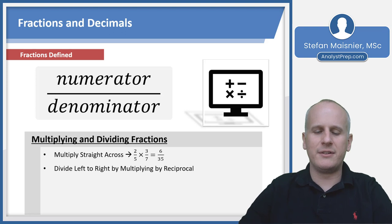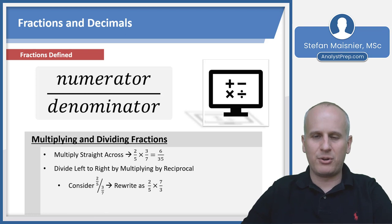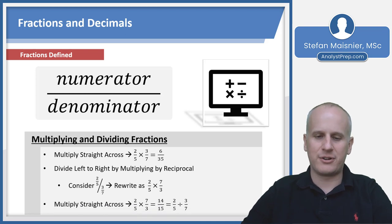But when dividing, you have to work left to right and multiply by the reciprocal. The reciprocal is the inverted fraction. If we divide two fifths by three sevenths, rewrite it as two fifths times seven thirds. Then multiply straight across left to right to get 14 fifteenths.